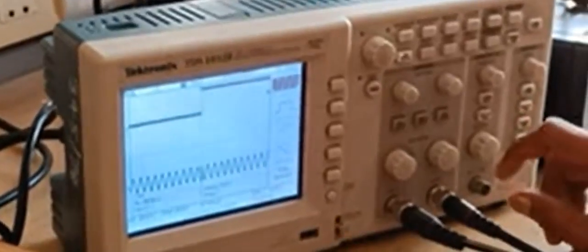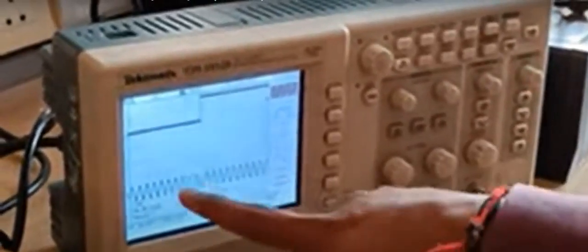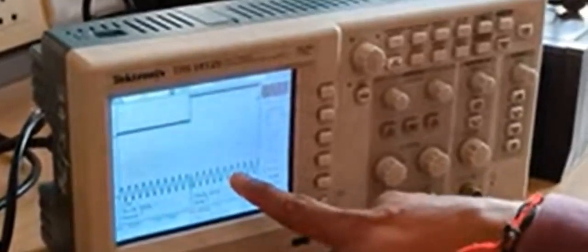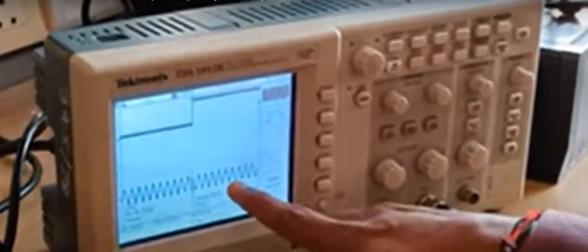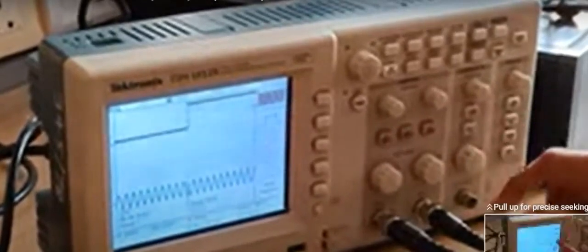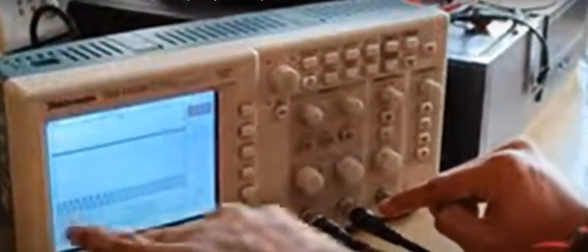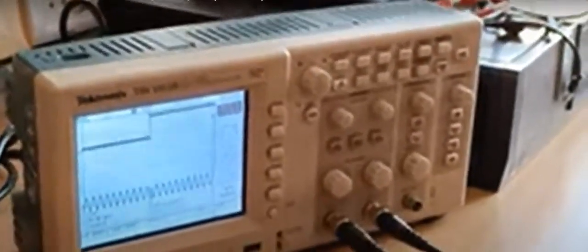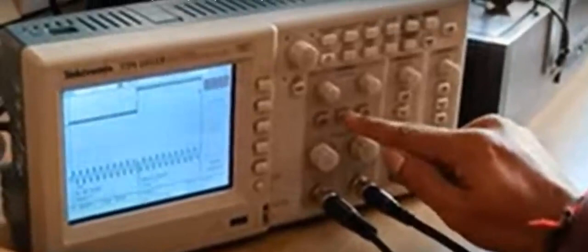So now what we will do—see, this is the channel 2 signal, right? It is a time domain signal. Now we would like to see this time domain signal with respect to spectrum. So it is applied to channel 2. I will be taking a channel 2 spectrum.